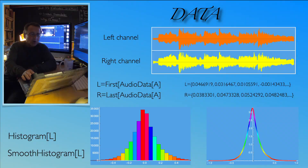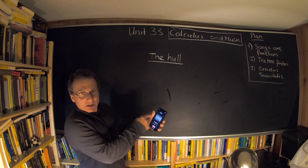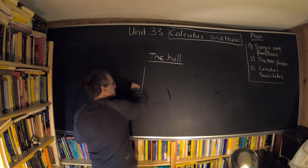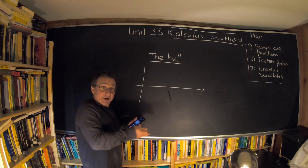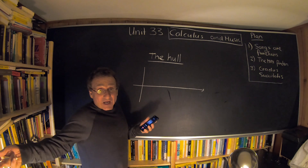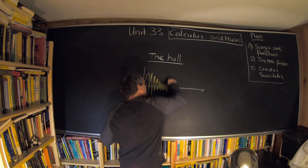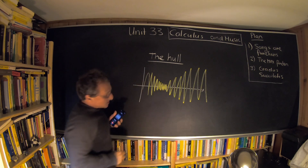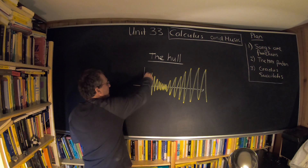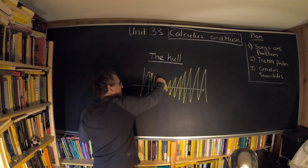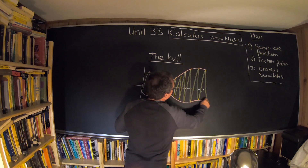We can also access this data and work with it — for example, make a histogram or a smooth histogram which gives us a PDF. If we look at the function for this recording, what we see is not actually the graph of the function. The function is oscillating so many times — the lowest frequency is 440 times per second. What we actually see is the hull: we connect the successive maxima and draw that hull.